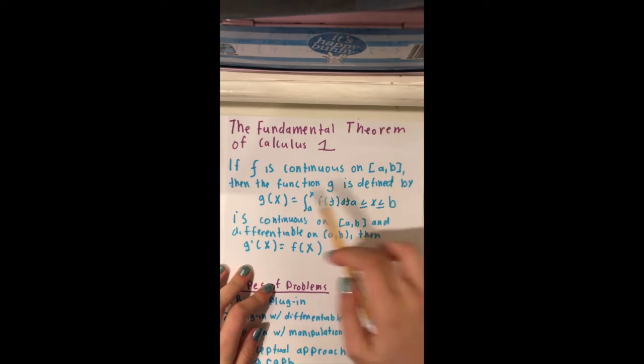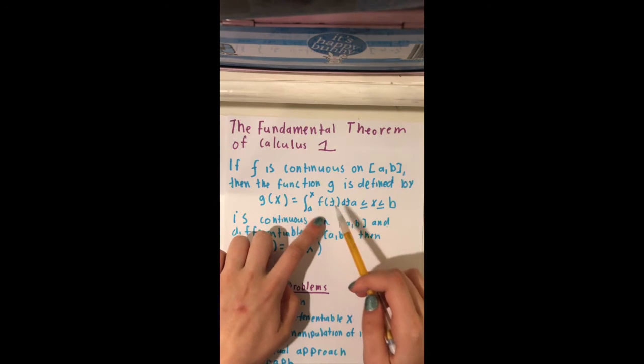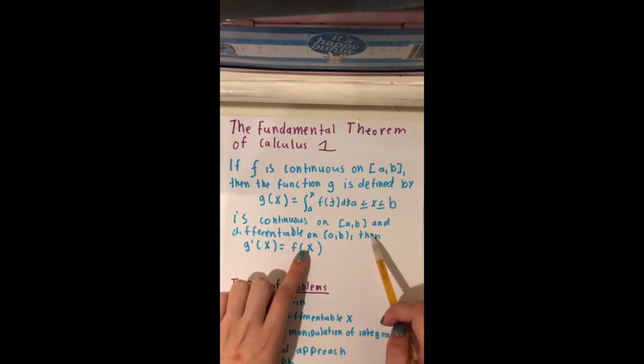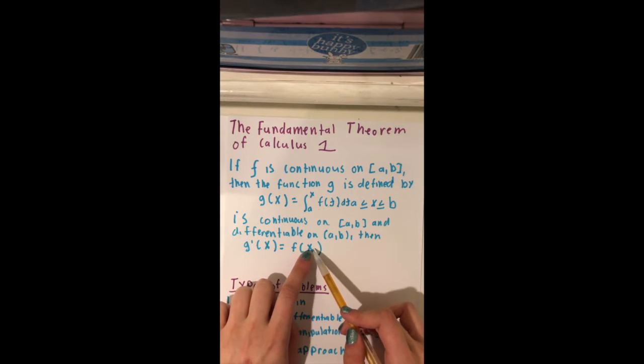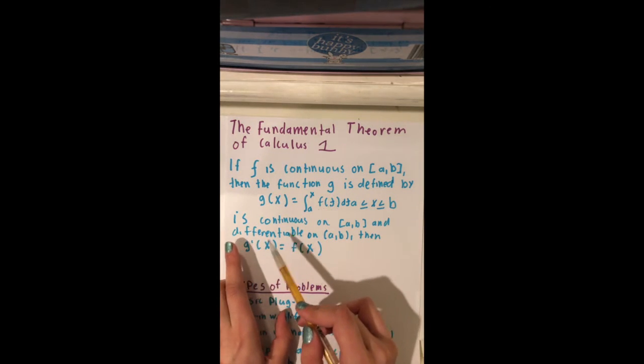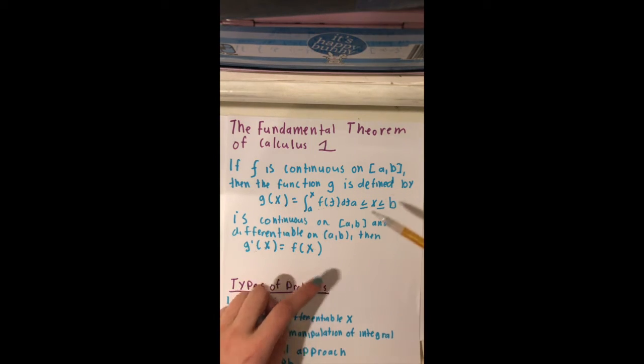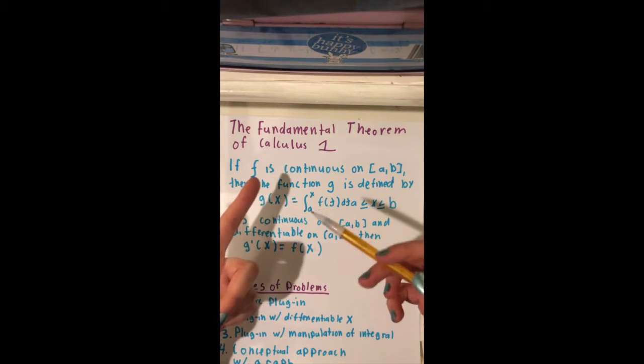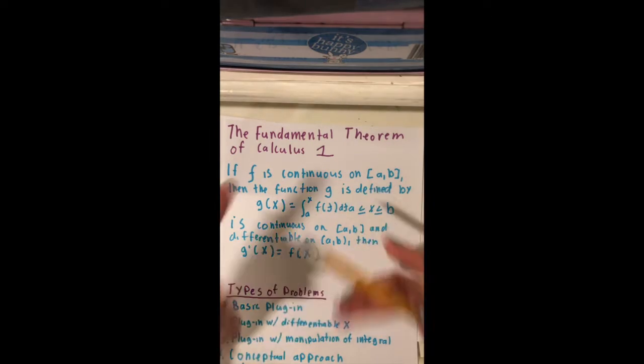If f is continuous on a, b, then the function g is defined by g of x is the antiderivative of f of t, and is continuous on a, b, and differentiable, then the derivative of g of x is f of x. This makes sense because if the antiderivative of f of x is g of x, then we just go the other way around, we're just hopping back and forth.